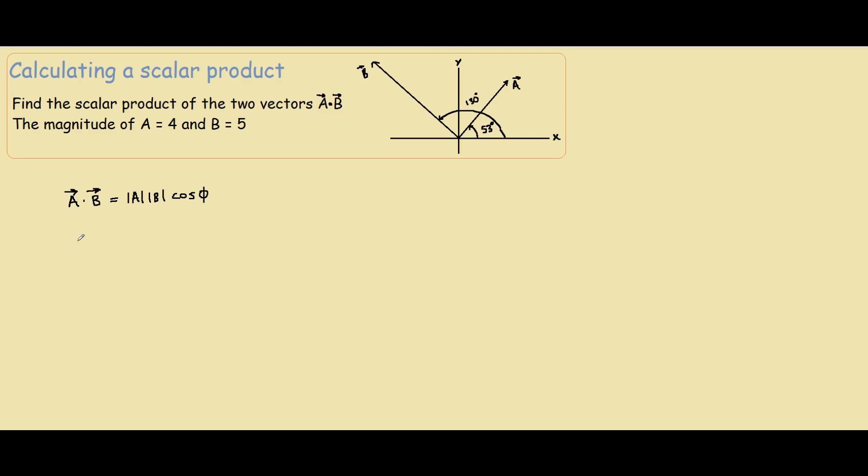What would that be? Well, we know B is 130 degrees, so we minus 53. That should give us the angle, and this comes up to be 77 degrees.